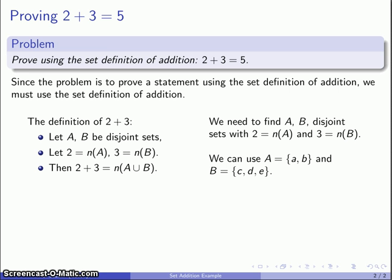How about making our second set c, d, and e? Let's check our conditions: are they disjoint sets? We can see that the sets do not have any elements in common, so we're good. We also need 2 to be the cardinality of A, and it is. Three to be the cardinality of B, and again it is. So we're all set to go.